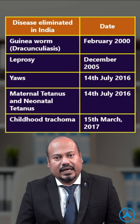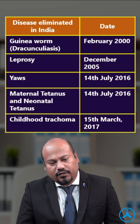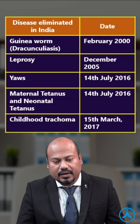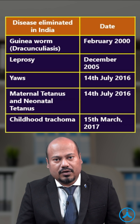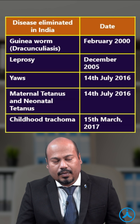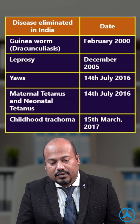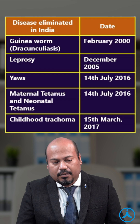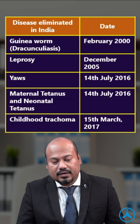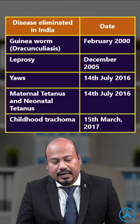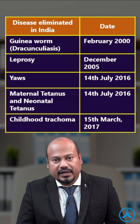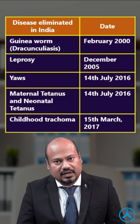So what are the diseases eliminated in India so far? Number one, guinea worm disease, also called dracunculiasis, done in February 2000. Number two, leprosy, done in December 2005. Number three, yaws. Number four, maternal tetanus and neonatal tetanus, done on the 14th of July 2016. And number five, childhood trachoma on 15th of March 2017.